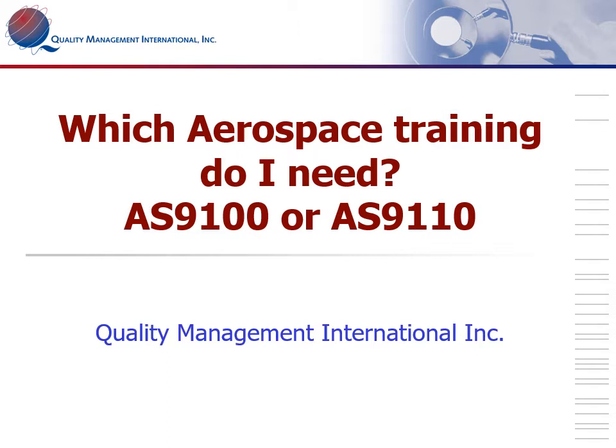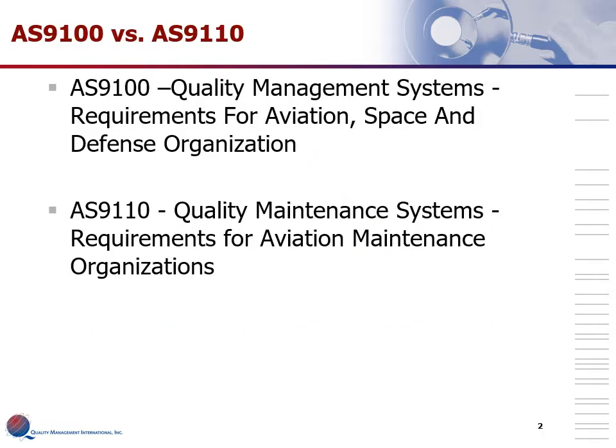So let's look at which training you need. AS9100 covers the quality management system requirements for aviation, space, and defense organizations, primarily those working in the manufacturing industry. AS9110 provides the quality management system requirements for aviation maintenance organizations, including all types of maintenance and repair organizations serving the aviation industry.